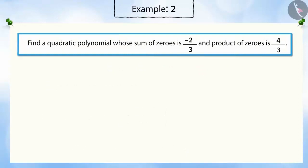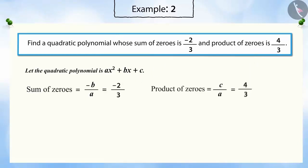Find a quadratic polynomial whose sum of zeros is -2/3 and product of zeros is 4/3. Here, the quadratic polynomial is ax² + bx + c. We know that the sum of zeros is -b/a and the product of the zeros is c/a.